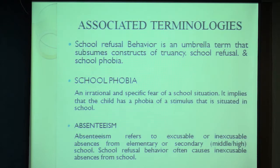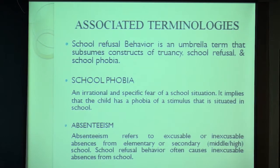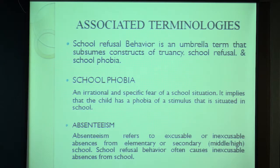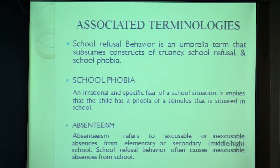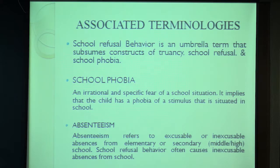School refusal is an umbrella term — a broader term — which encompasses constructs of truancy and school avoidance. School phobia is an irrational and specific fear of a school situation, implying the child has a phobia of a stimulus situated in the school, so there is active avoidance. Absenteeism is a broad term referring to either excusable or inexcusable absences from elementary or secondary school; school refusal behavior generally causes inexcusable or unexplainable absences.